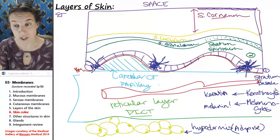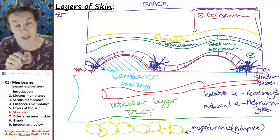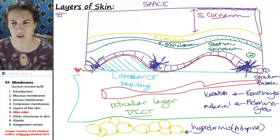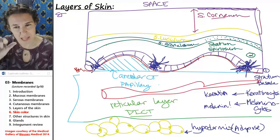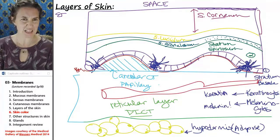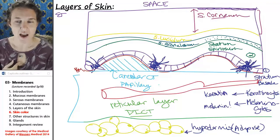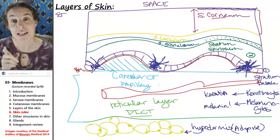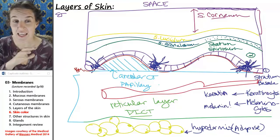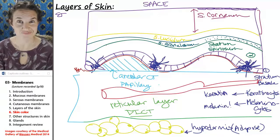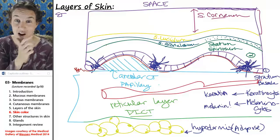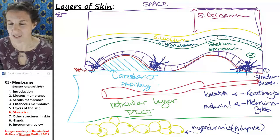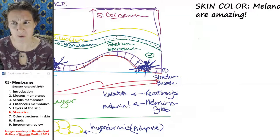So we already mentioned that in stratum basale there are these awesome cells called melanocytes. And I think — I can't remember if I told you — that all of us, no matter what color our skin is, all of us have the same number of melanocytes in our skin, which is super mind-blowing to me.